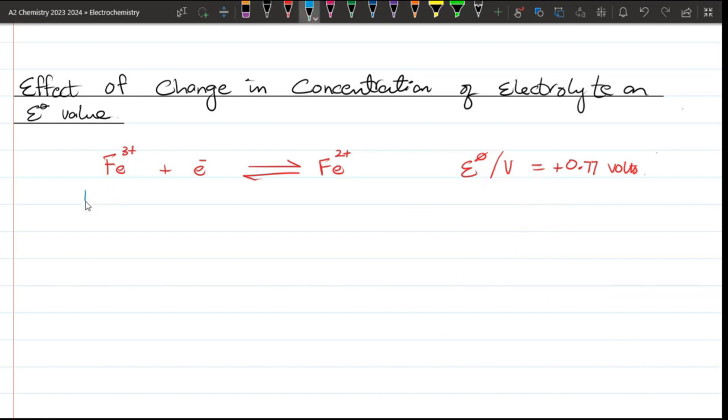So now I will say that the concentration of Fe³⁺ was 1 mole per dm³ and Fe²⁺ was 1 mole per dm³. What did I do? The concentration of Fe²⁺ was reduced to 0.9 mole per dm³. So you will think about it and then I will tell you.